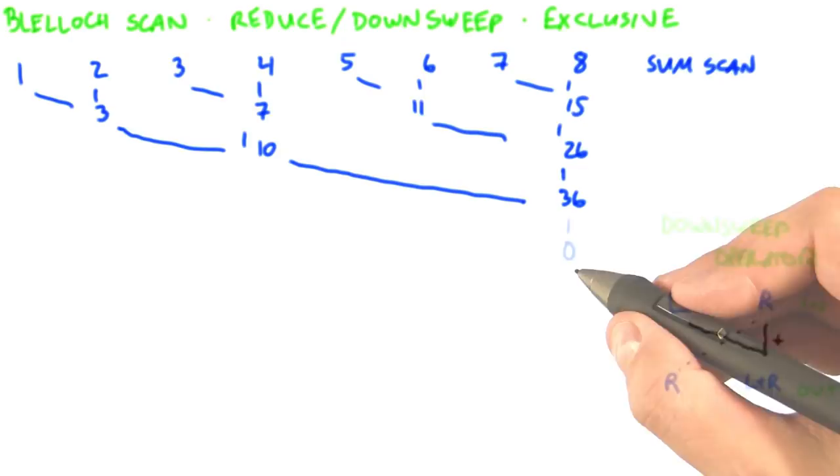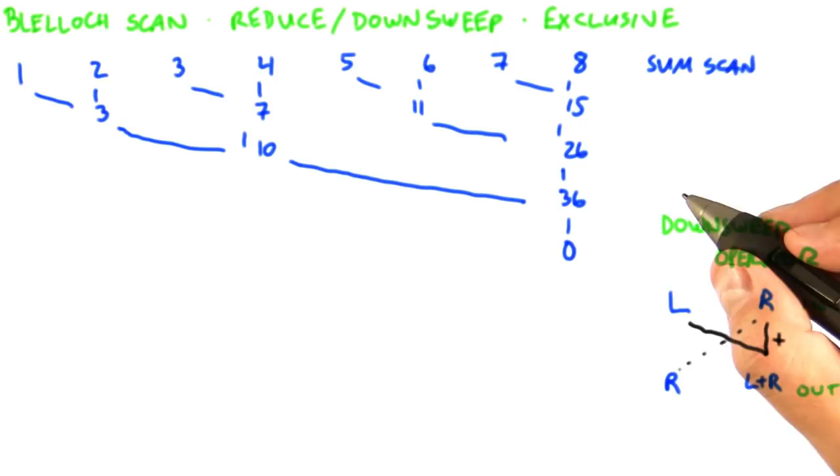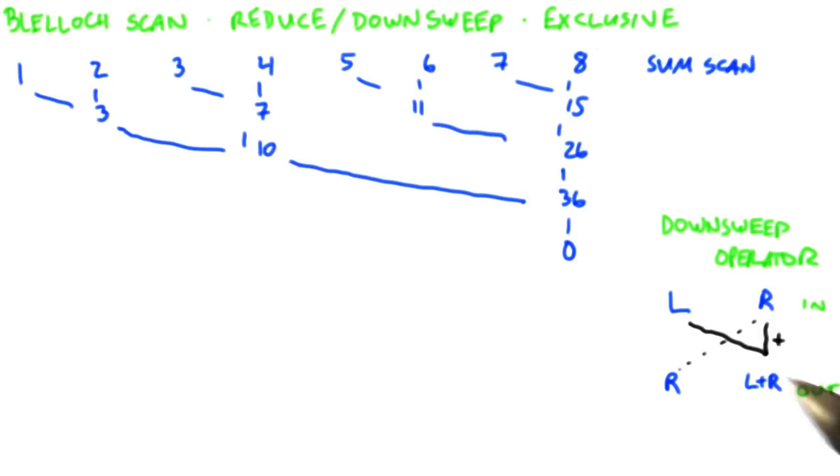Now step 2, the down sweep. We're going to start by resetting the rightmost piece of data to the identity operator. For sum, that identity operator is 0. And now we're going to use a communication pattern that is exactly the same as what we saw in the reduction step except in a mirror image. So we see that we have this triangle kind of structure here. We're going to do the same thing upside down when we do down sweep.